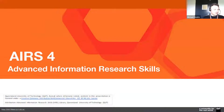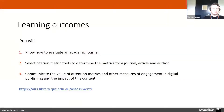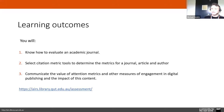We're up to AIS 4, and the modules we'll be covering today are modules 10 and 11. We'll be looking at how to evaluate an academic journal and some tools we can use for that, as well as citation metric tools to determine specific metrics that help gauge how prestigious and influential a piece of research is, and communicating the value of attention metrics and other measures of digital engagement.